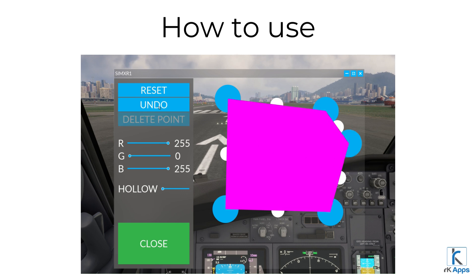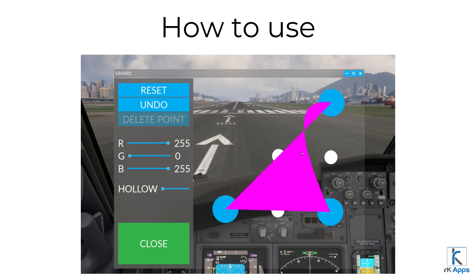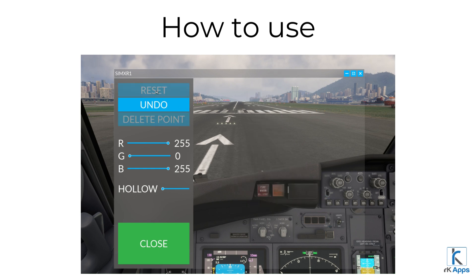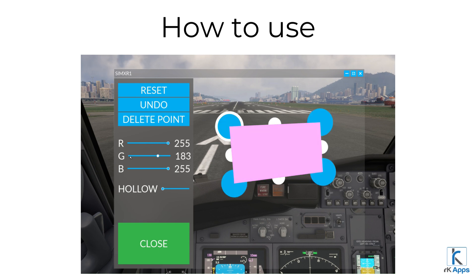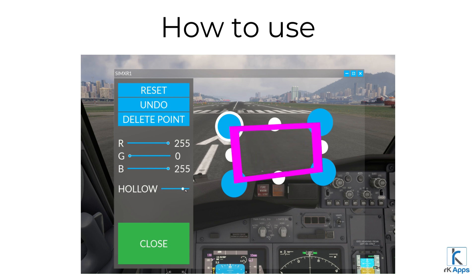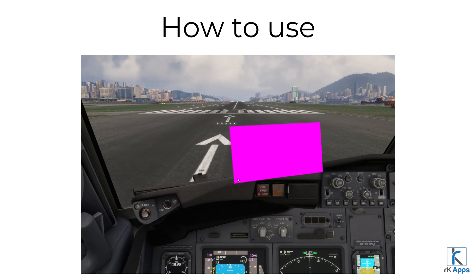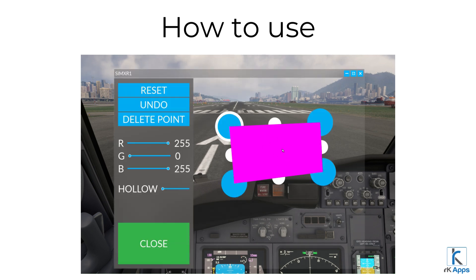The undo button will undo the last changes you made. Use the delete button in order to delete the selected point. Use the reset button in order to delete the whole polygon you created. The RGB sliders allow you to match the colors to be exact like in the virtual desktop pass-through settings, otherwise mixed reality won't work. Use the hollow slider to create a hole in the polygon. Once done creating your polygon, click close — this will make only the polygon visible. Keep it this way while flying. To readjust the polygon, simply click on the polygon itself to open the settings window.